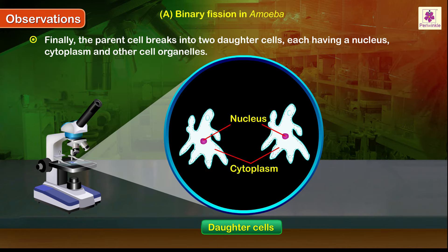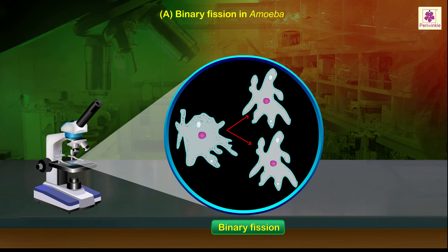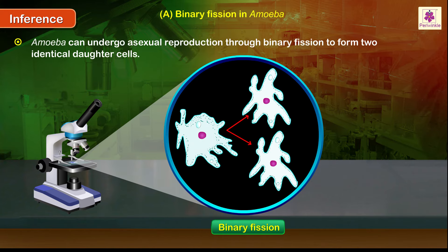Finally, the parent cell breaks into two daughter cells, each having a nucleus, cytoplasm, and other cell organelles. Inference: amoeba can undergo asexual reproduction through binary fission to form two identical daughter cells.